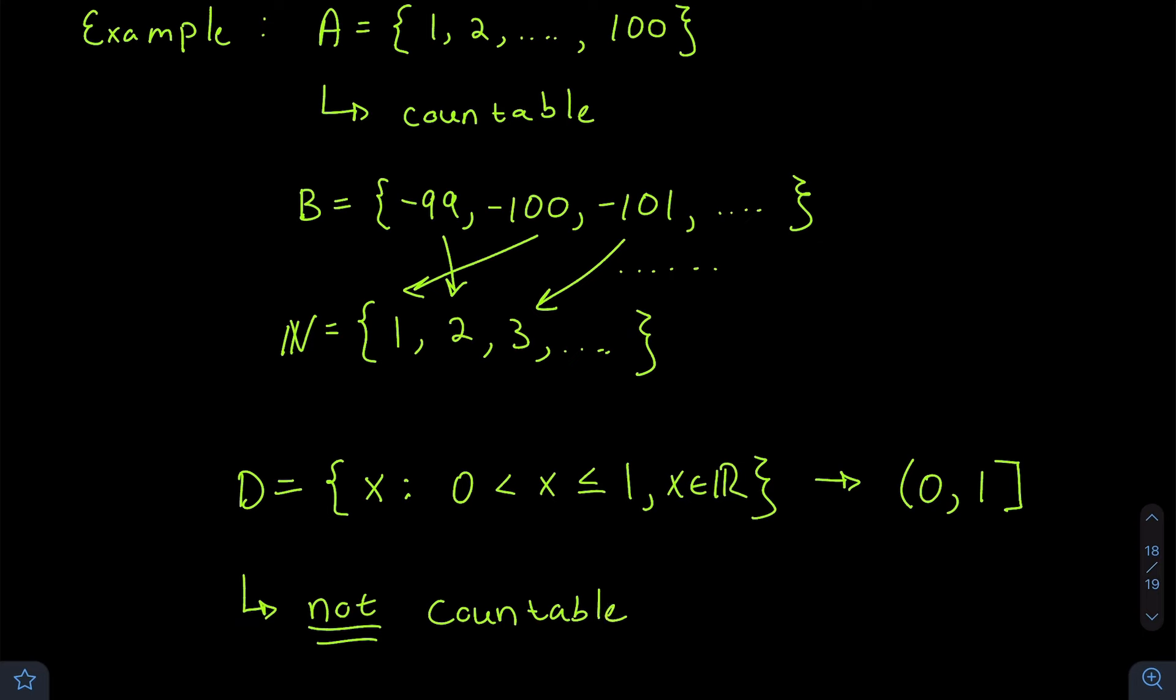We can't easily map every element in this interval to an element in the natural numbers because there's always a number between any two numbers you can pick. For example, if I pick a number between 1/2 and 3/4, there's going to be a number between that number and 1/2, and so on. There's never an opportunity to single out an element here to map to the natural numbers.